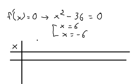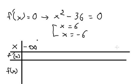So we have x and the first derivative of the function. We go from negative infinity to positive infinity. We have two critical points here, so we put negative six and positive six.